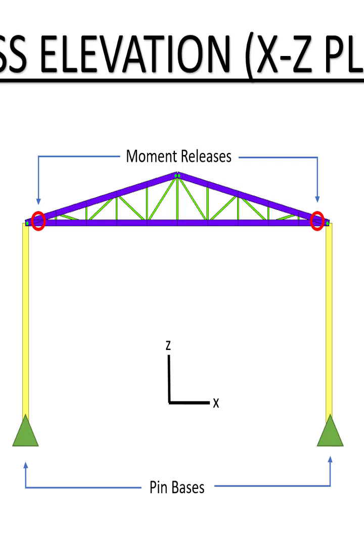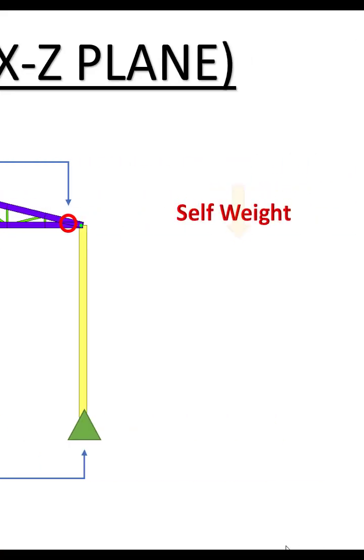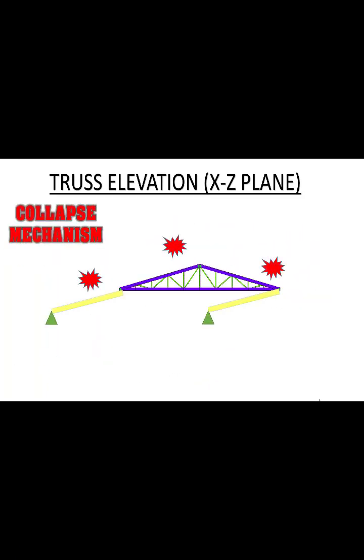We are analyzing this structure for gravity loads, but lateral load may hit the structure, or even self-weight induces some eccentricities which may lead to structural collapse. This is what we call the collapse mechanism.